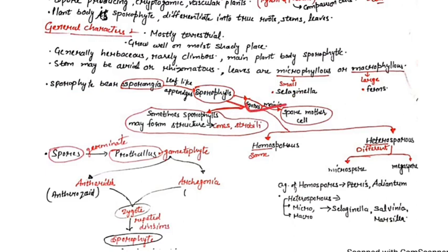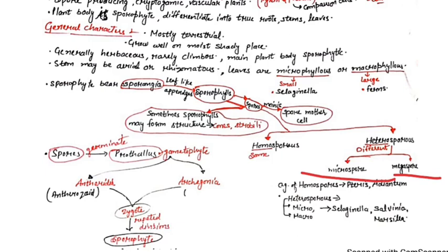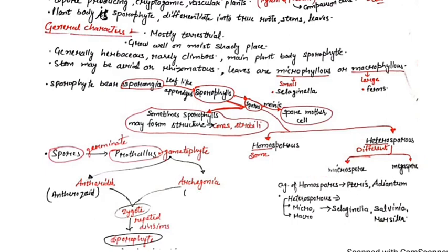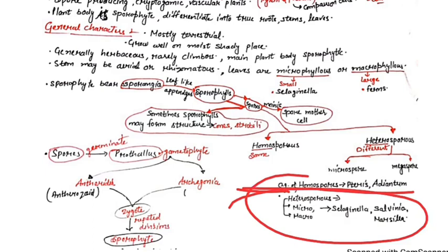There are two types of spores: homospores and heterospores. Homospores are all the same size. Heterospores are of two types: microspores — small-sized spores — and megaspores — large-sized spores. Examples of homosporous pteridophytes are ferns and Adiantum. Heterosporous examples are Salvinia, Selaginella, and Marsilea.